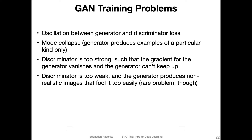One problem is the constant oscillation between the generator and discriminator loss. Things never converge — they might just keep oscillating.